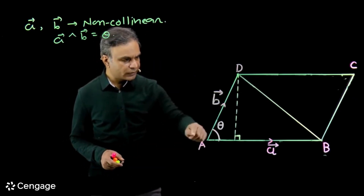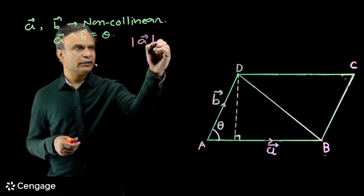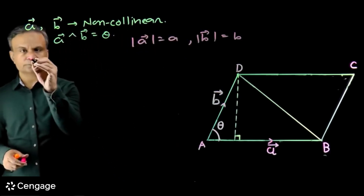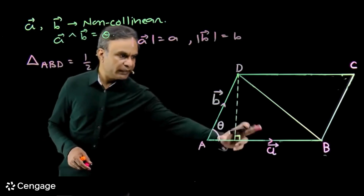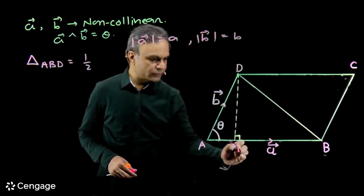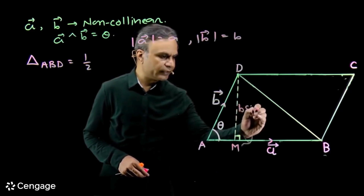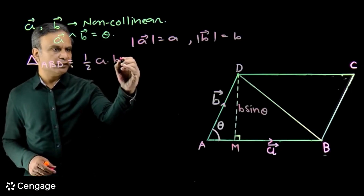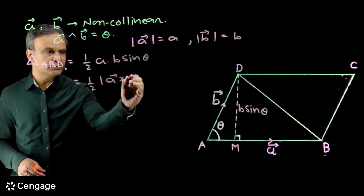What is the area of triangle ABD? Suppose the modulus of A is A and modulus of B is B. Then area of triangle ABD will be one-half times base times height. The base is A. For the height, in this right angle triangle, suppose M is the foot of the perpendicular from D upon AB. Then height DM will be B sin theta. So area of triangle ABD is one-half times A times B sin theta. And A B sin theta is actually the modulus of A cross B.